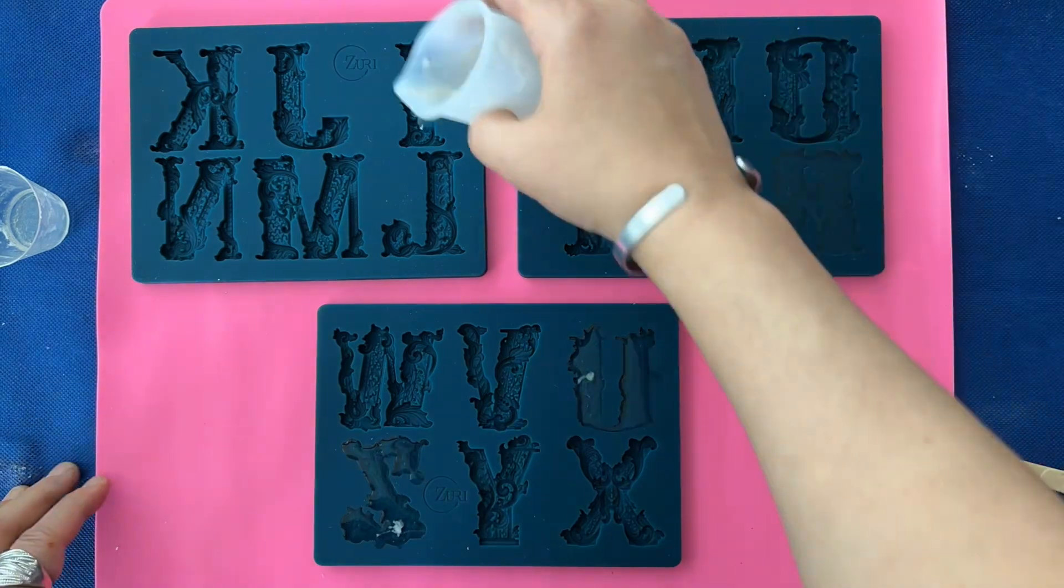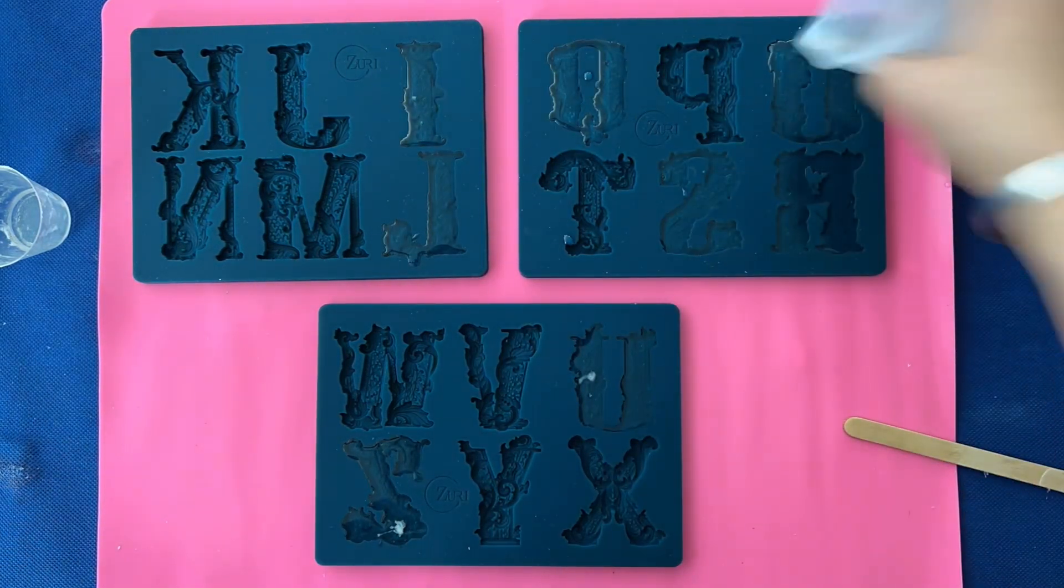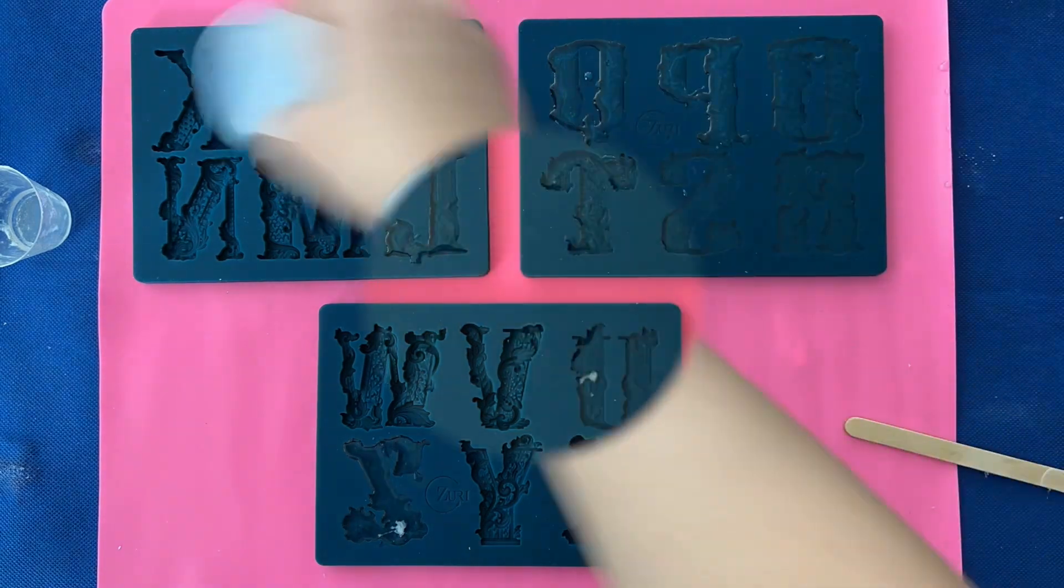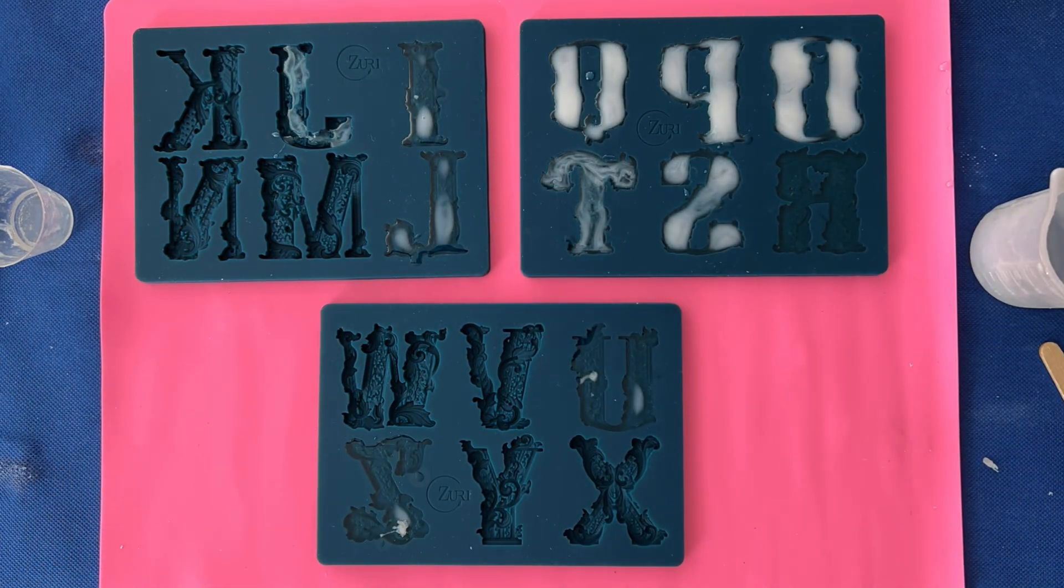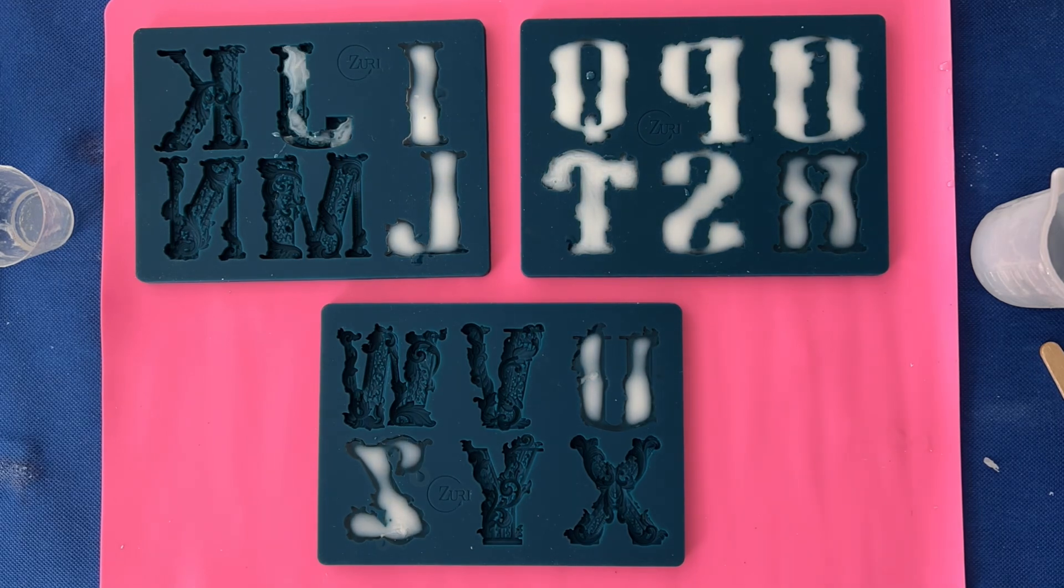Mixing my side A and B of my amazing resin, I am now pouring on the letters and you can see the drying process. It turns white once you finish pouring for 10 minutes.